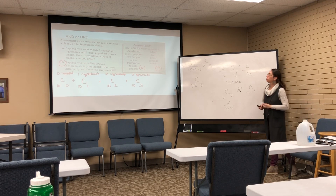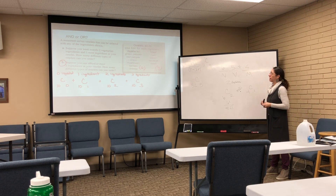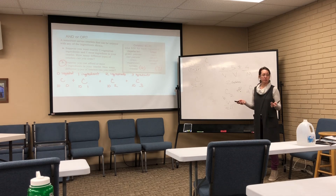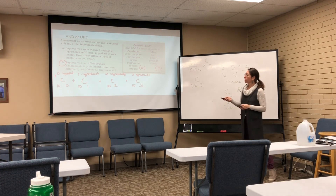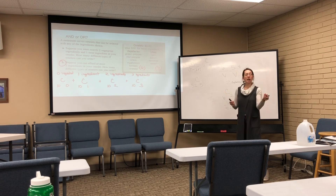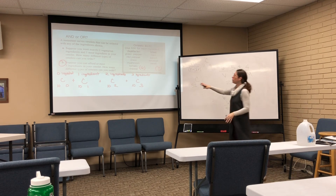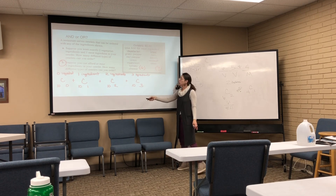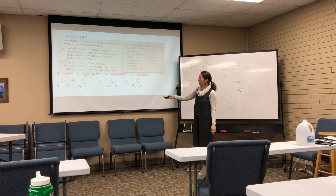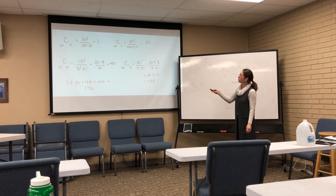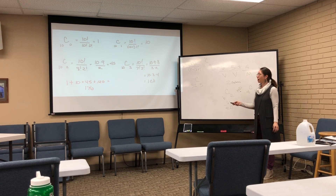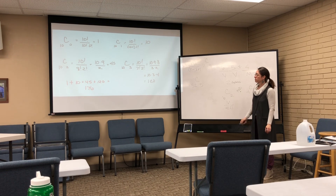Suppose you can afford at most three ingredients. That means you can have zero ingredients, one ingredient, two ingredients, or three ingredients. With 10 total ingredients: C(10,0) + C(10,1) + C(10,2) + C(10,3). We plug each into our formula and add them together — there are 176 different options.